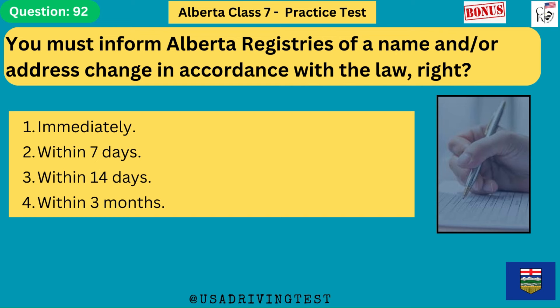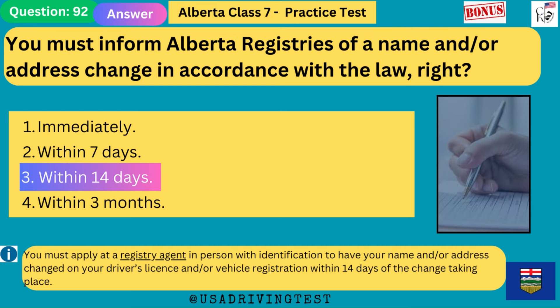You must inform Alberta registries of a name and/or address change in accordance with the law within: 1. Immediately. 2. Within 7 days. 3. Within 14 days. 4. Within 3 months. The answer is 3: within 14 days. You must apply at a registry agent with identification to have your name and/or address changed on your driver's license and/or vehicle registration within 14 days of the change taking place.